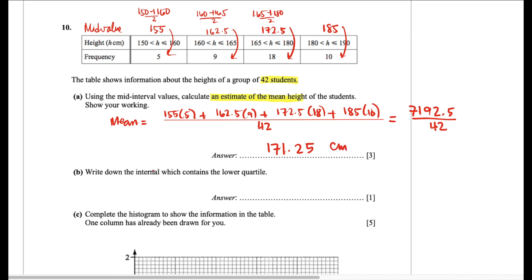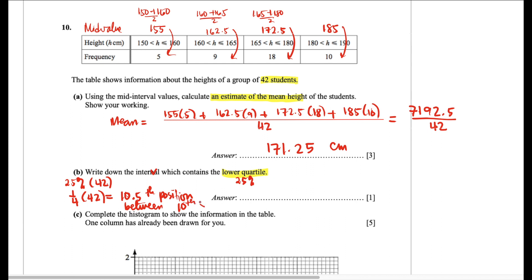Question 10 letter B: write down the interval that contains the lower quartile. The lower quartile is located in the first 25% of the frequency. So, 25% of 42 students — or one fourth of 42 — is 10.5. This means Q1 is located between the 10th and 11th scores. Looking at the frequencies, there are 5 scores in the first interval. Adding 9 scores from the 160 to 165 interval gives a total of 14 scores, which goes beyond the 10th and 11th scores. Hence, the lower quartile is found within the 160 cm to 165 cm interval.